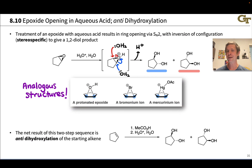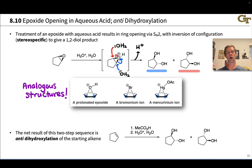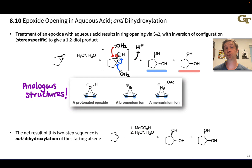The net result over these two steps is anti-dihydroxylation of the starting alkene: first, we form an epoxide using something like peracetic acid, and then we open that epoxide stereospecifically with inversion of configuration, where water attacks to give anti-1,2-dihydroxy products.